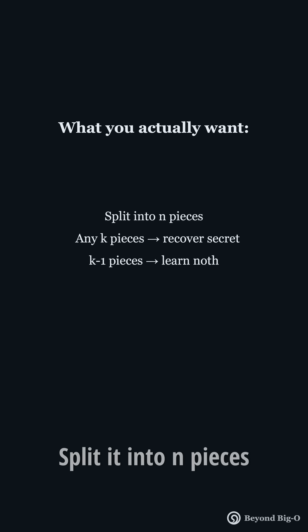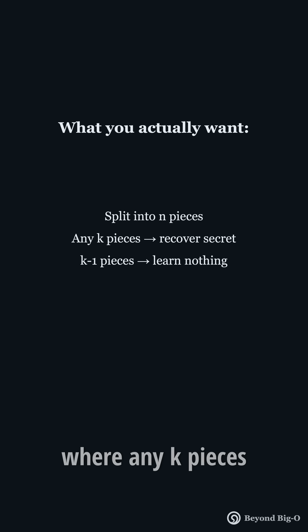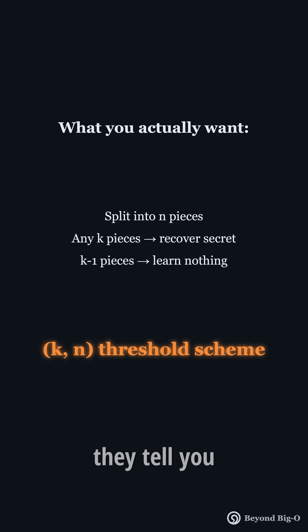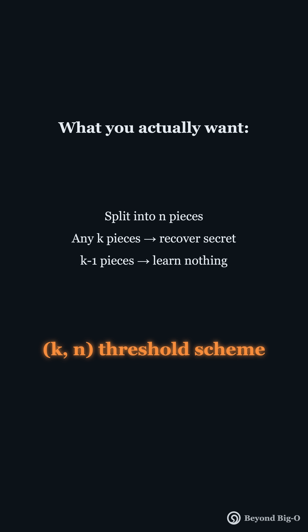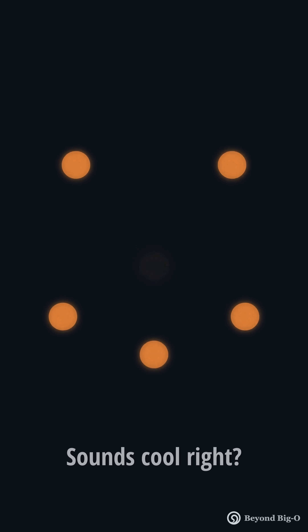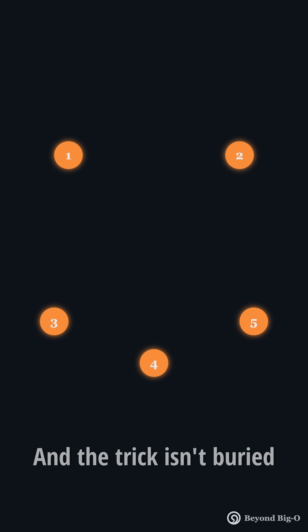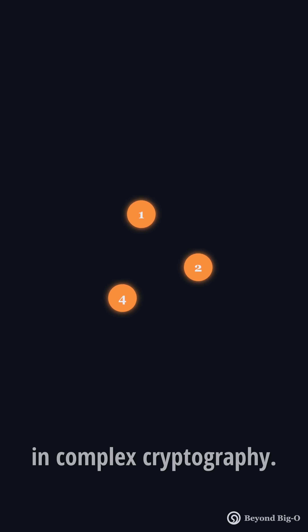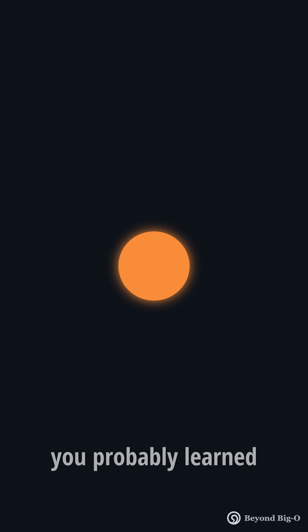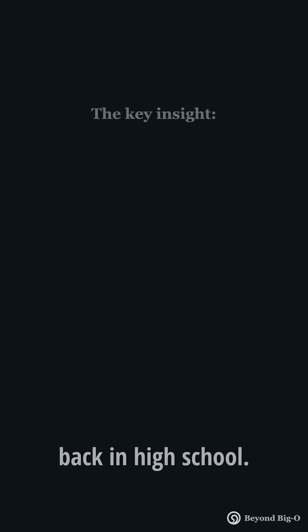Split it into N pieces, where any K pieces can recover the secret, but K-1? They are called a K-N threshold scheme. Sounds cool, right? And the trick isn't buried in complex cryptography — it's hiding in something you probably learned back in high school.